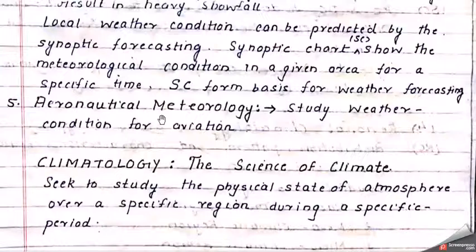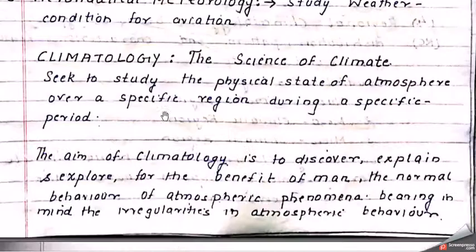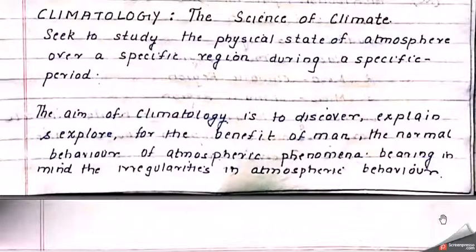Now we come to the basic definition of climatology. It is a science of climate that seeks to study the physical state of the atmosphere over a specific region during a specific period. The region can be India, Nepal, Bhutan, or anywhere in the world, and there is a specific time frame involved. The aim of climatology is to discover, explain, and explore, for the benefit of man, the normal behavior of atmospheric phenomena — bearing in mind the irregularities in atmospheric behavior.